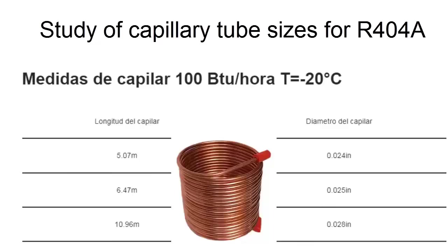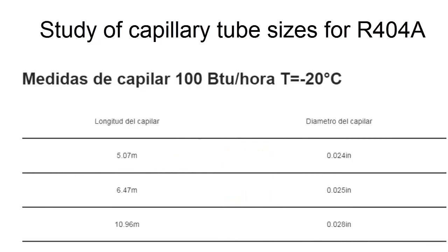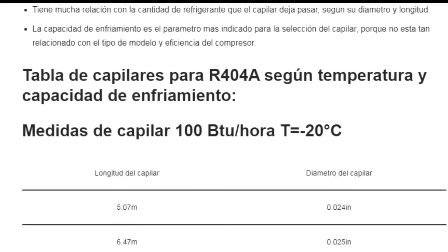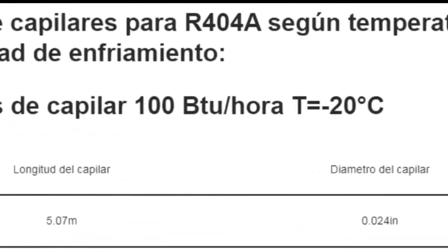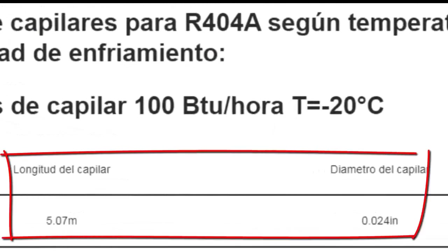Now the interesting part begins when we make the following comparisons. The following measurements are obtained from the first row: with a diameter of 0.24 inches, the recommended capillary length is 5.7 meters.